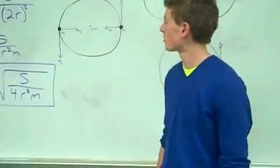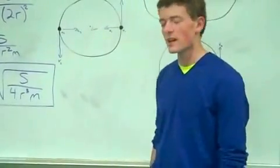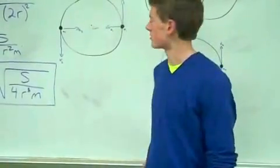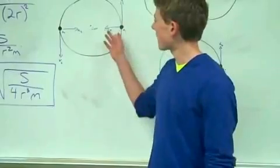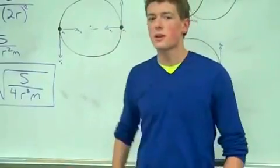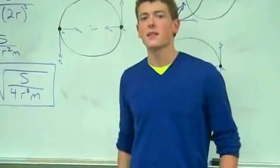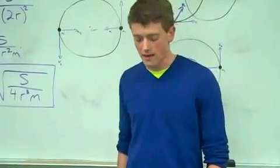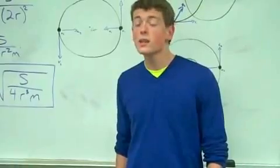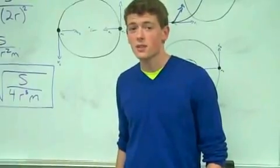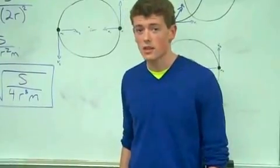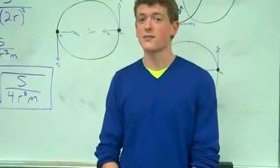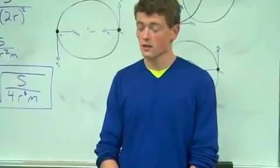In our experiment, we want to create an artificial binary star system that uses magnets of equal strength and mass that rotate in a circular orbit around their center of mass. We would like to use magnetic strength instead of gravity because both forces follow inverse square laws.